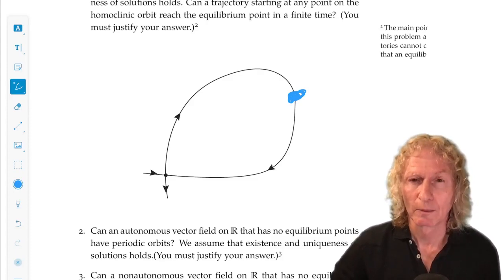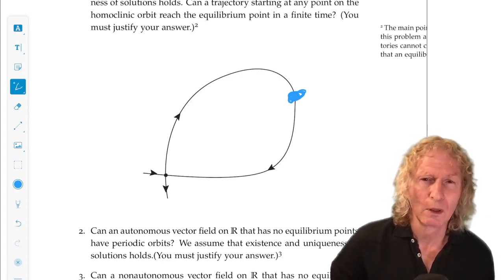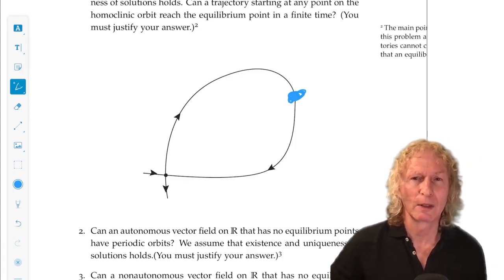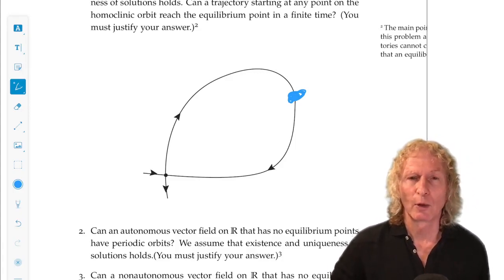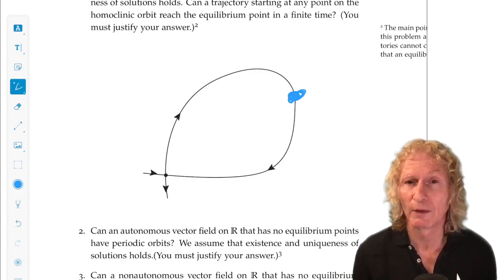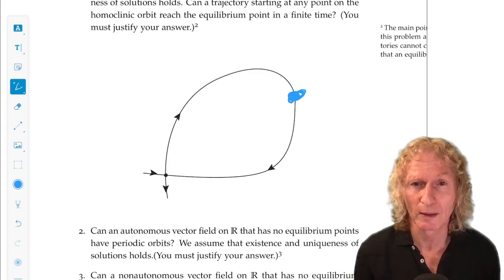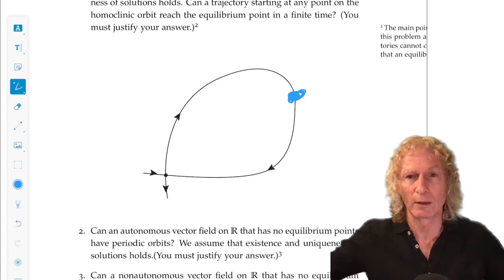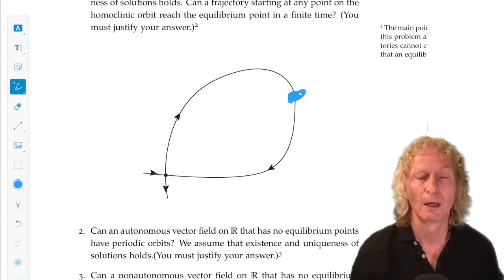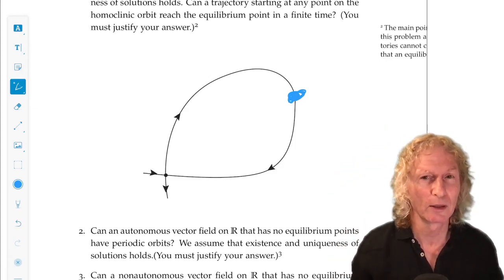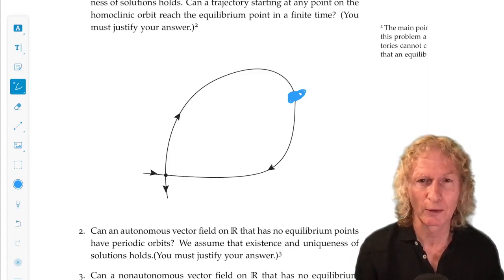Trajectories cannot cross. Very important. Of course, you need to be careful with what you mean about cannot cross. So what I mean is they cannot occupy the same point in phase space at the same time. Two trajectories cannot cross. And that's a big deal. There are a lot of consequences from that.